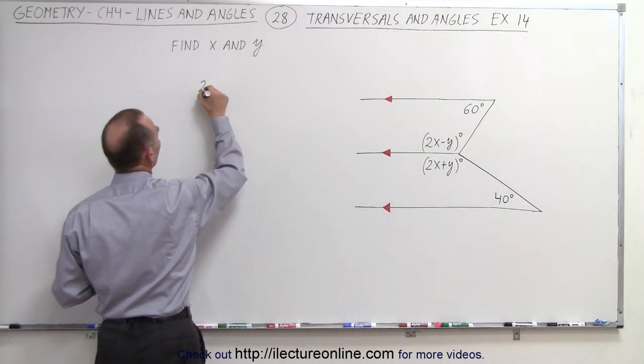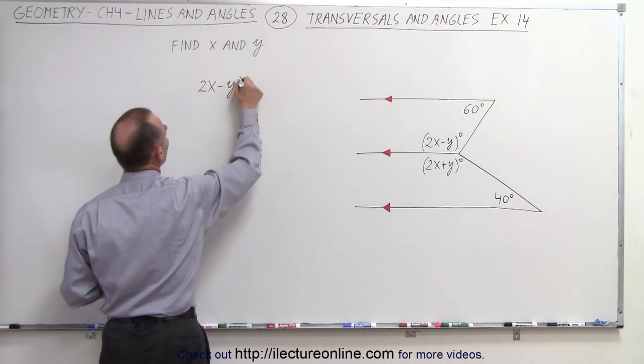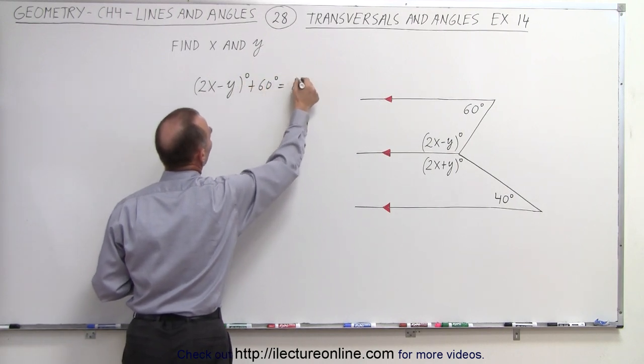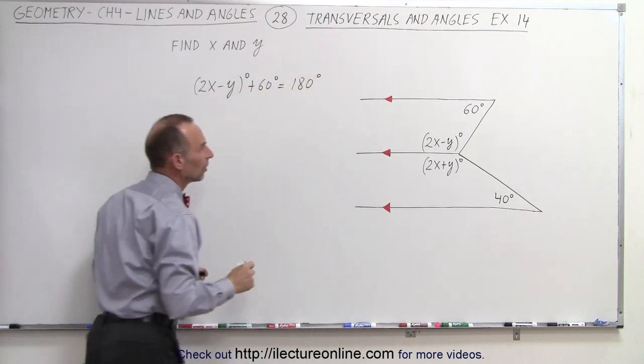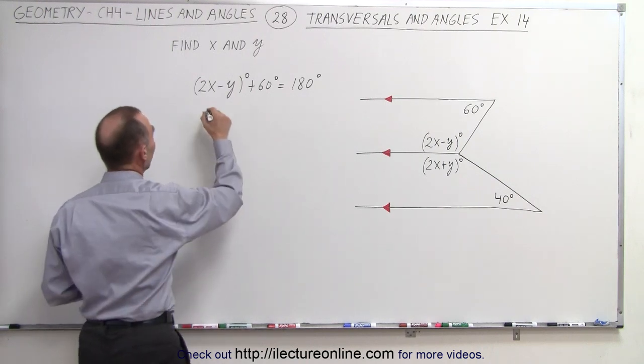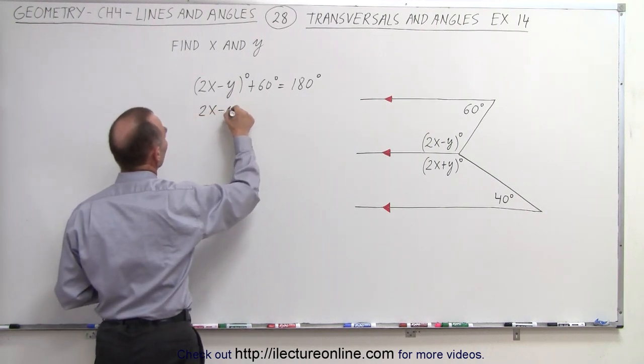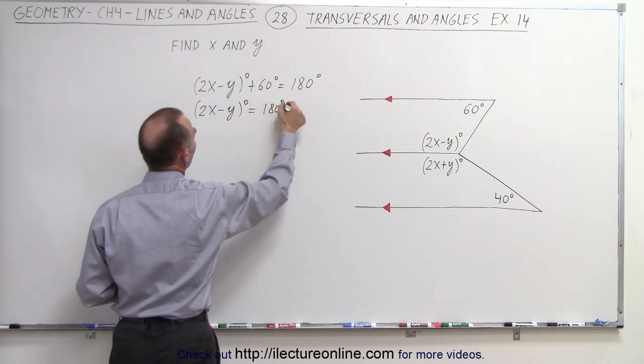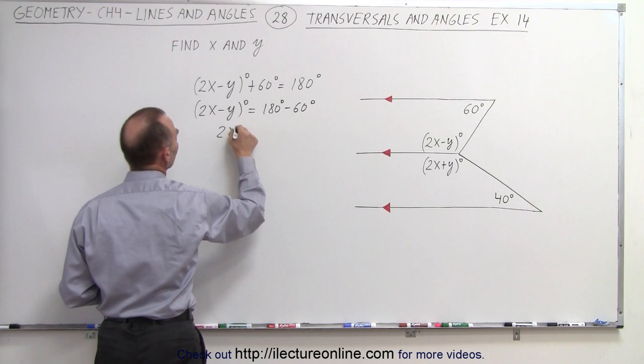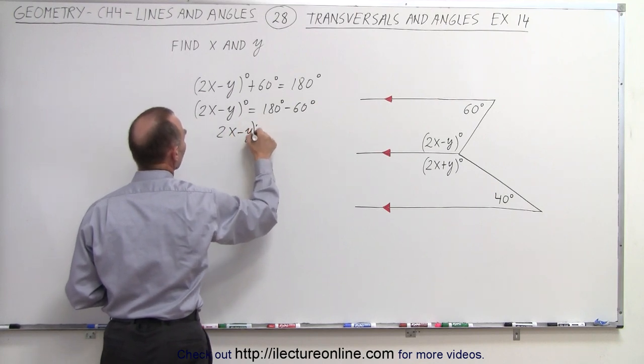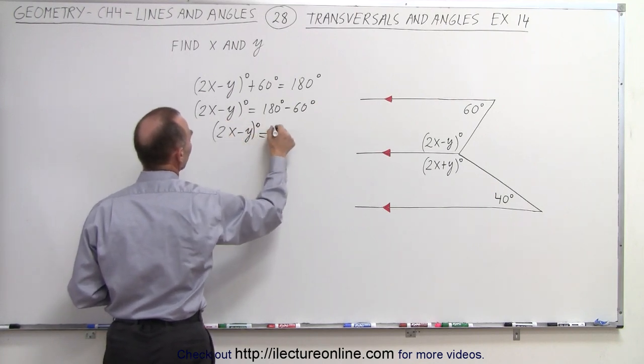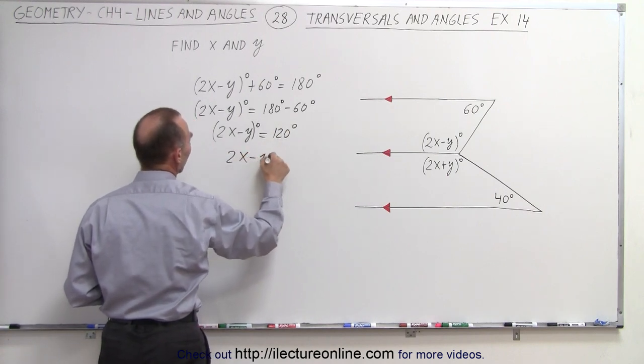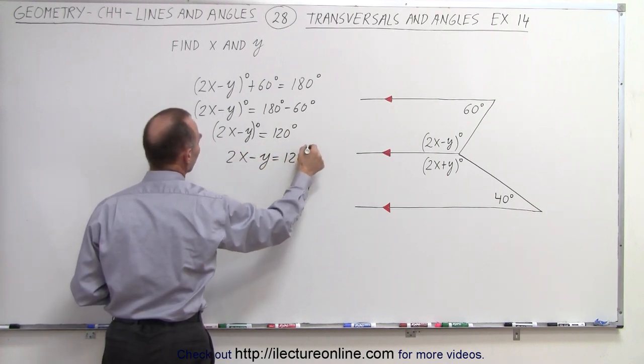we can write that 2x minus y degrees plus 60 degrees adds up to 180 degrees. Now we can subtract 60 from both sides, so we can write 2x minus y degrees is equal to 180 degrees minus 60 degrees, or 2x minus y degrees equals 120 degrees, which means that 2x minus y equals 120.